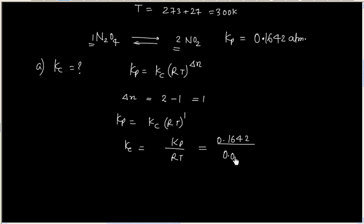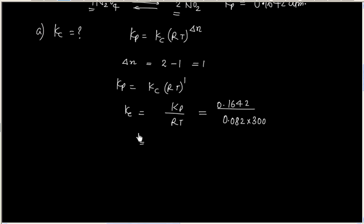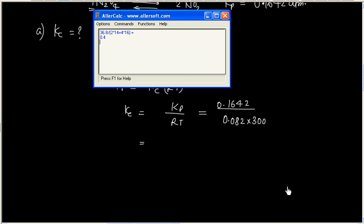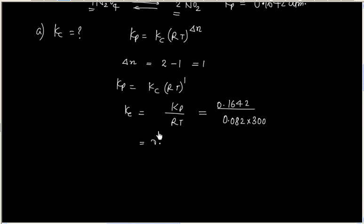So Kc equals Kp divided by RT. The Kp value is 0.1642, divided by R times 300 Kelvin. Calculating this gives us 0.667 into 10 to the power minus 2, or equivalently 6.67 into 10 to the power minus 3. This is the value of Kc.